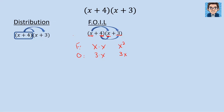The inner terms — the 4 and the x — give us 4 times x, or 4x. And then the last two — the 4 and the 3 — give us 4 times 3, which is 12. Then we add these all up, combine like terms, and we get x squared plus 7x plus 12. Same answer by the FOIL method.